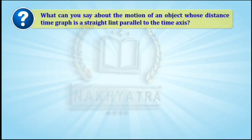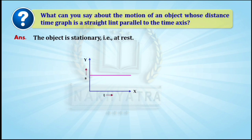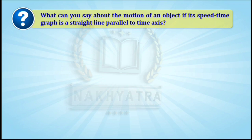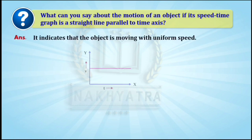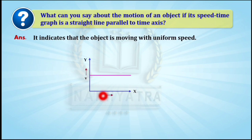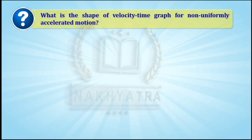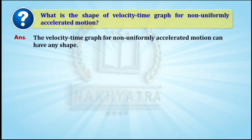If the distance-time graph is a straight line parallel to the time axis, the object is stationary, that is at rest. If the speed-time graph is a straight line parallel to the time axis, the object is moving with uniform speed — remember this graph, it is very important. For non-uniformly accelerated motion, the velocity-time graph can have any shape; it has no specific shape.